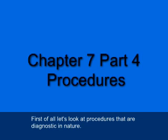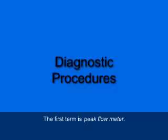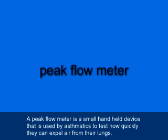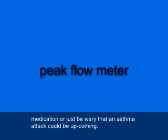First, let's look at procedures that are diagnostic in nature. The first term is peak flow meter. A peak flow meter is a small handheld device used by asthmatics to test how quickly they can expel air from their lungs. It's meant to help them monitor their condition, and if they notice a change, they may need to adjust their medication or be wary that an asthma attack could be upcoming.